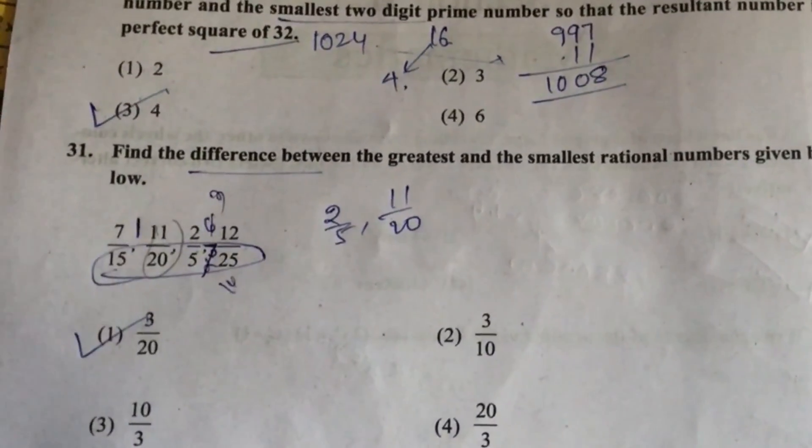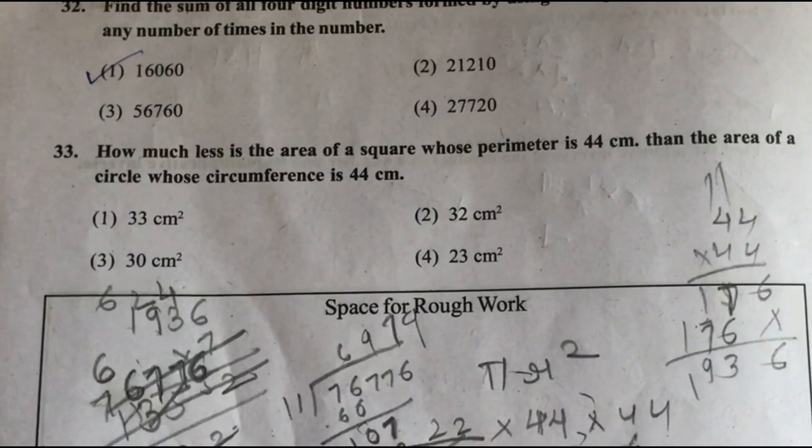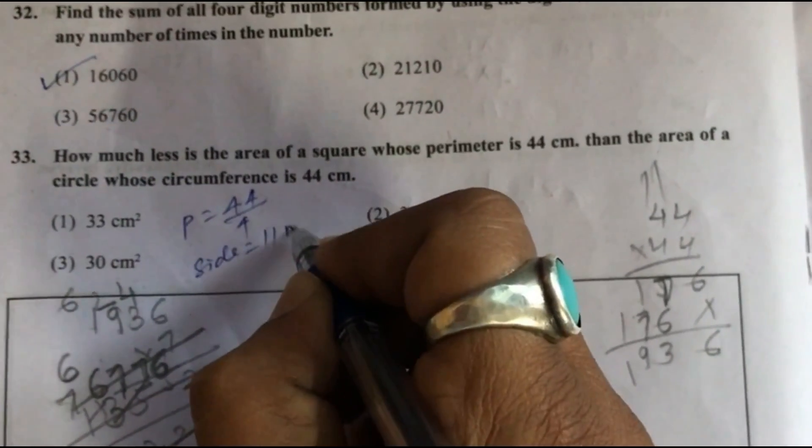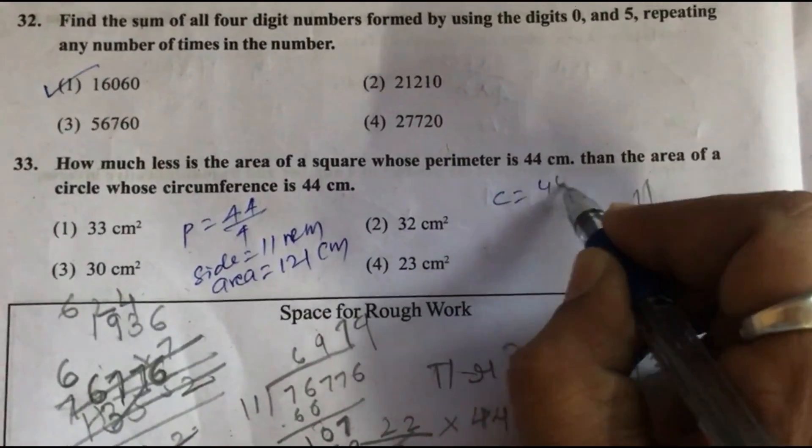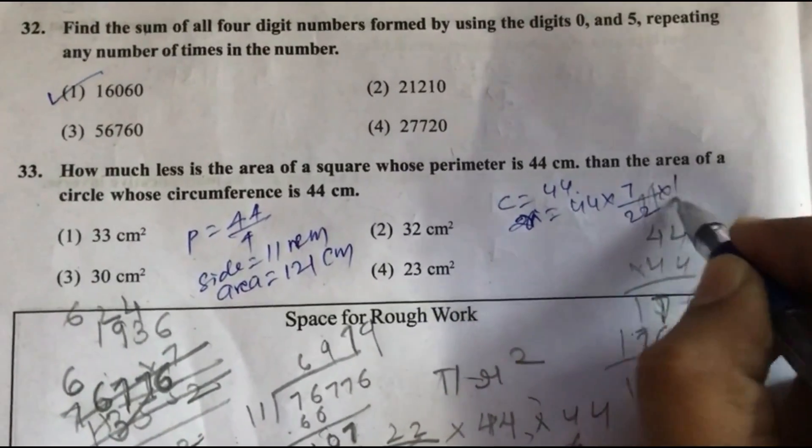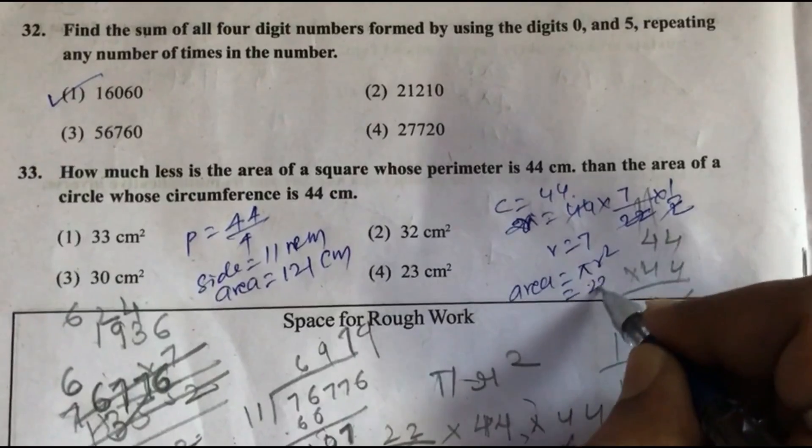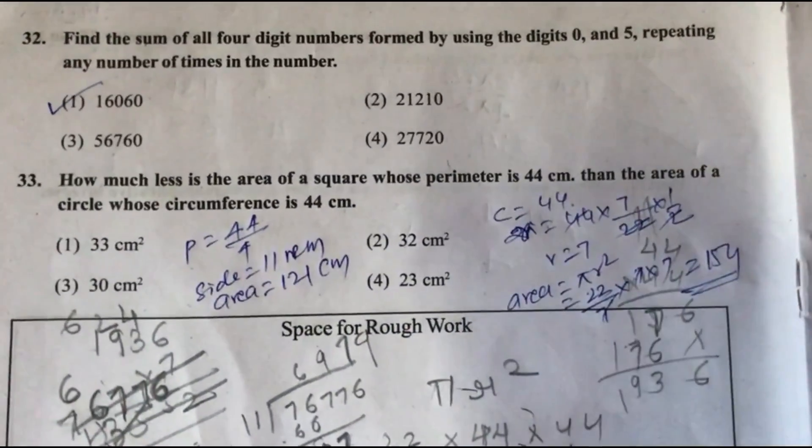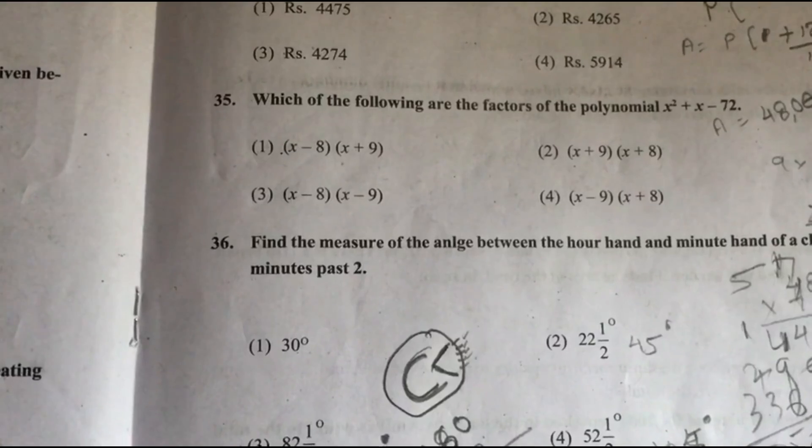Option 1. Question 32: How much less is the area of a square whose perimeter is 44 centimeter than the area of a circle whose circumference is 44 centimeter? Perimeter is 44, so side is 11 centimeter, so area of square is 121. Circumference is 44 centimeter, radius is equal to 7, so area of circle is pi r square, that is 154. 154 minus 121, answer is 33, option 1.